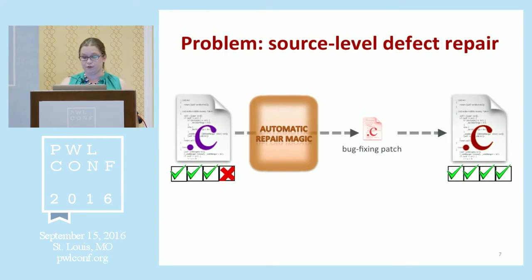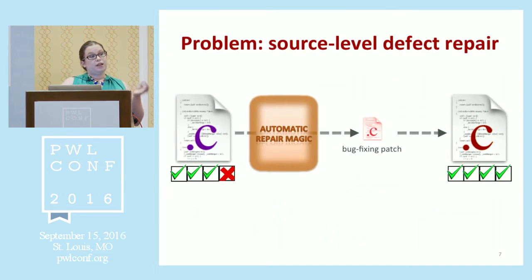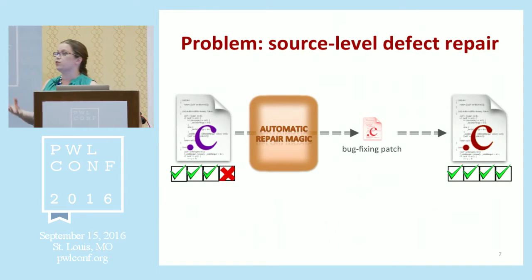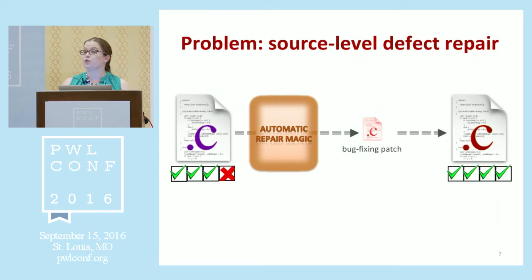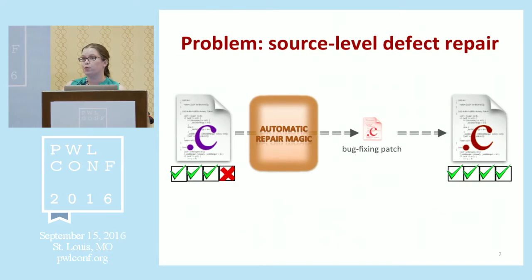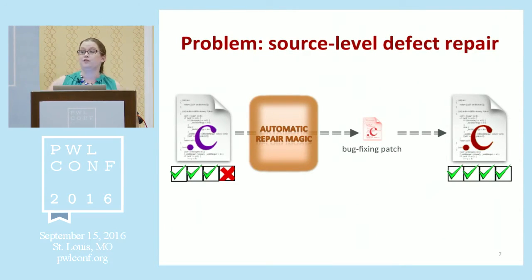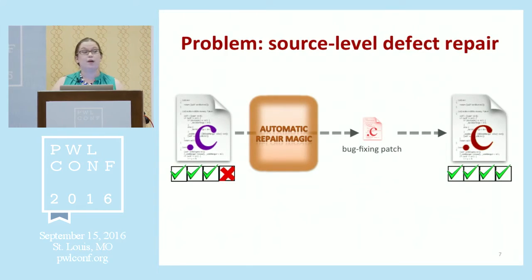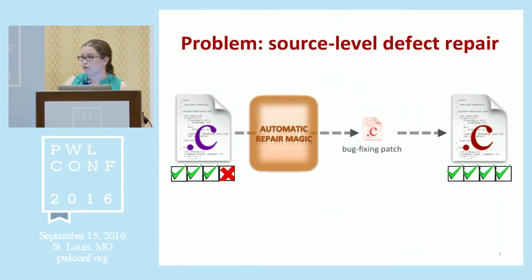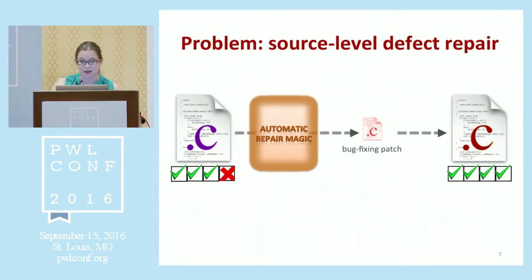I'm telling you this story because there's a slightly different perspective that software engineering research takes in this kind of work than you might encounter reading programming languages, analysis, or security work. They're doing really cool and important stuff addressing whole classes of defects — can we make it so that we never have a buffer overflow again, can we prevent control hijacking attacks? That work is important and it's shipping in modern software, but it's not the approach that we're taking in the software engineering community when it comes to fixing bugs automatically.